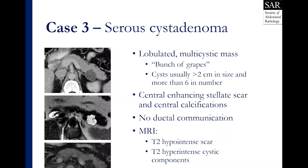Serous cystadenomas appear as lobulated multicystic masses. They have a bunch-of-grapes appearance, and usually the cysts are greater than 2 cm in size with multiple cysts within a single lesion, often more than 6 in number. There are examples where the cysts are very small — sometimes so small and packed together that they may mimic a solid lesion. These lesions have a central-enhancing stellate scar and central calcifications. There is no ductal communication between serous cystadenoma and the adjacent main pancreatic duct. On MRI, serous cystadenomas manifest with T2 hypointense scars as well as T2 hyperintense cystic components.